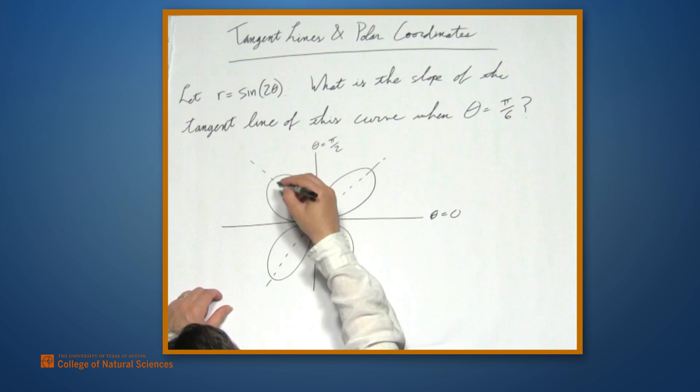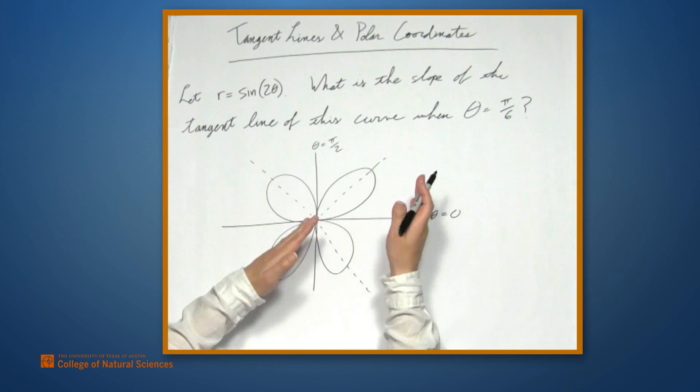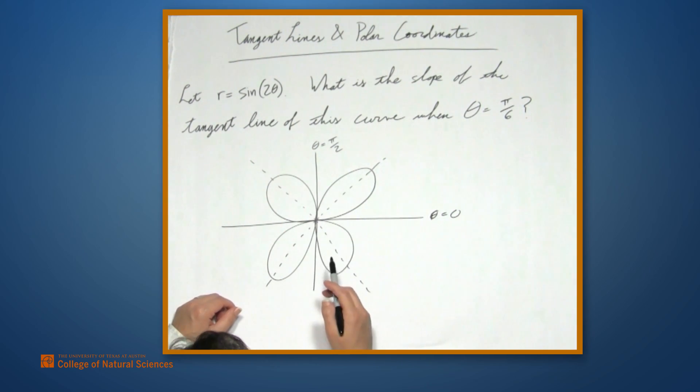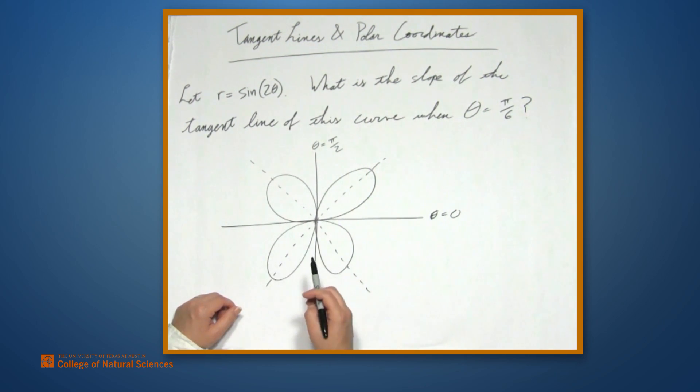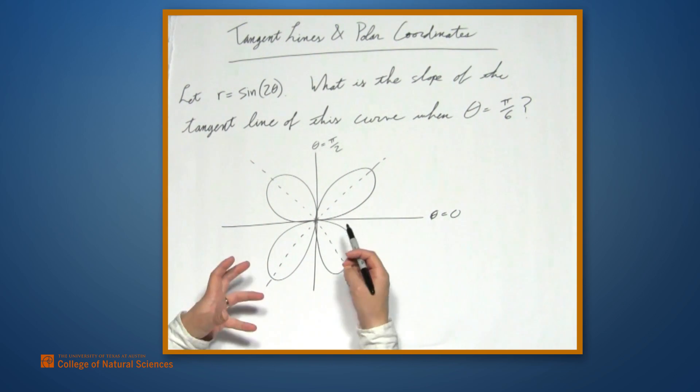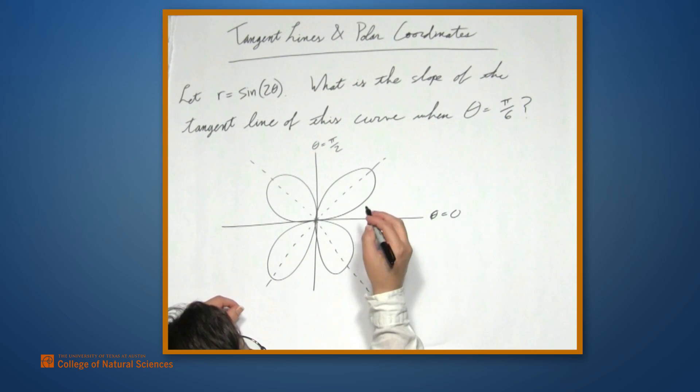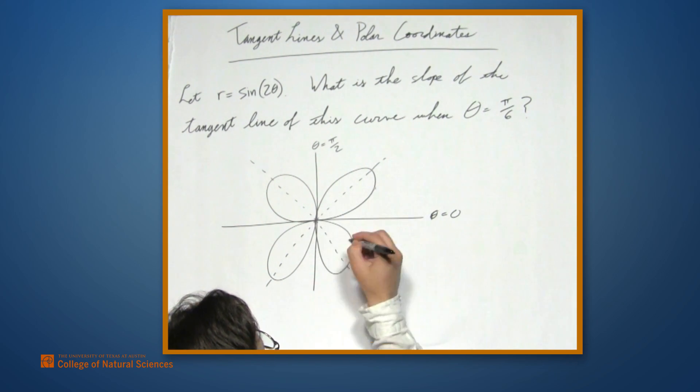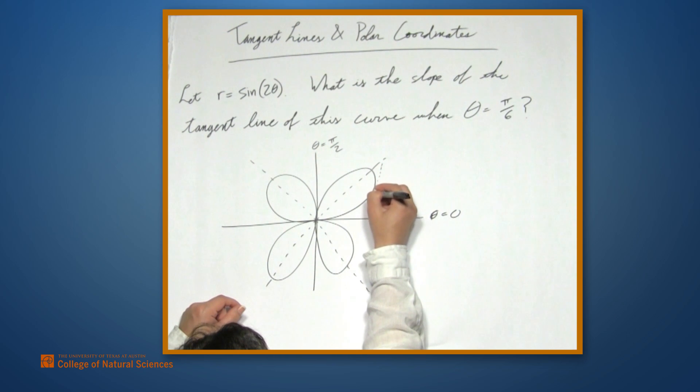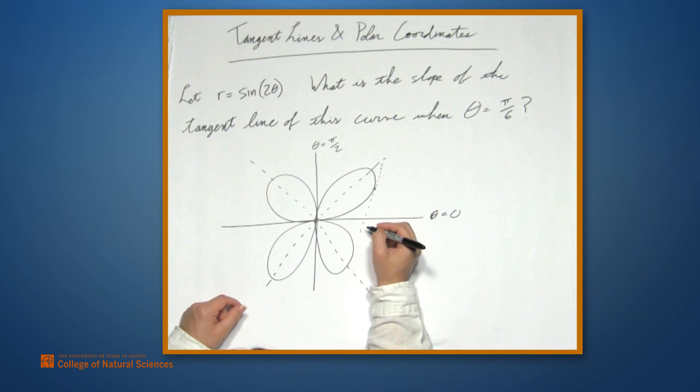Likewise, these dotted lines are 45 degrees off of all of these angles. But if we want to talk about the slope of a tangent line, we're talking about something that intrinsically lives in the x-y coordinate system. So theta is pi over 6. It's roughly, let's say, here. So we're looking at a tangent line somewhere around here. When we talk about the slope, we need x and y coordinates.